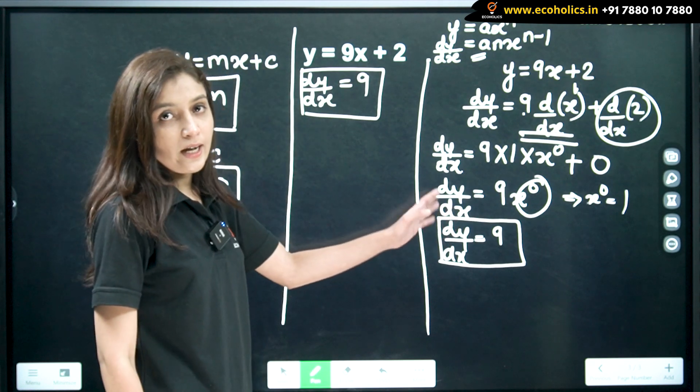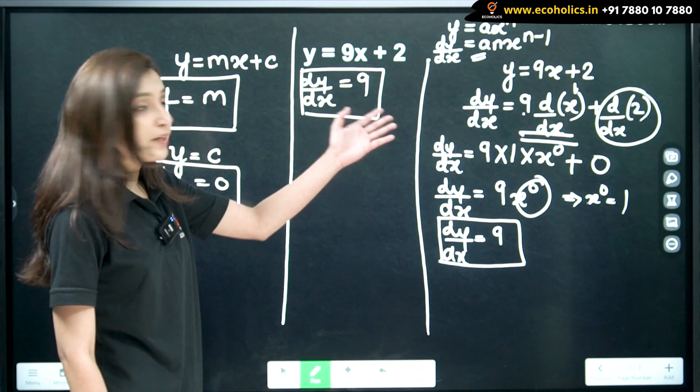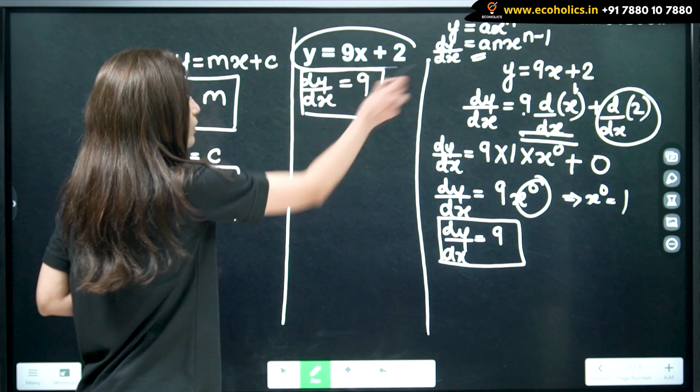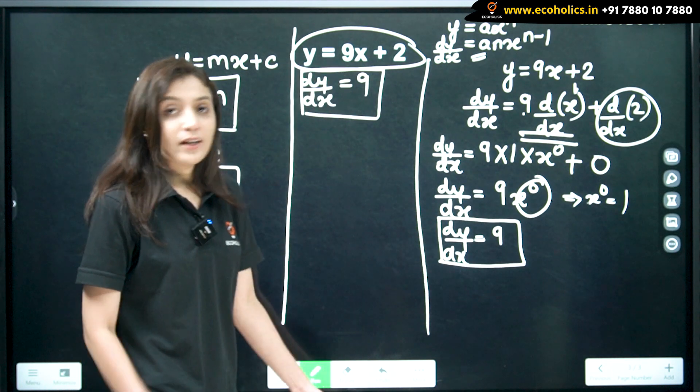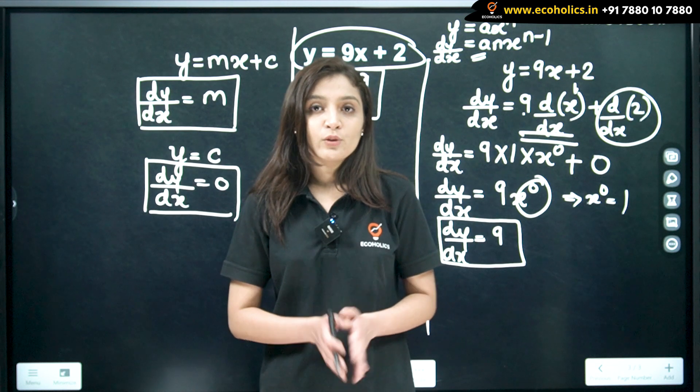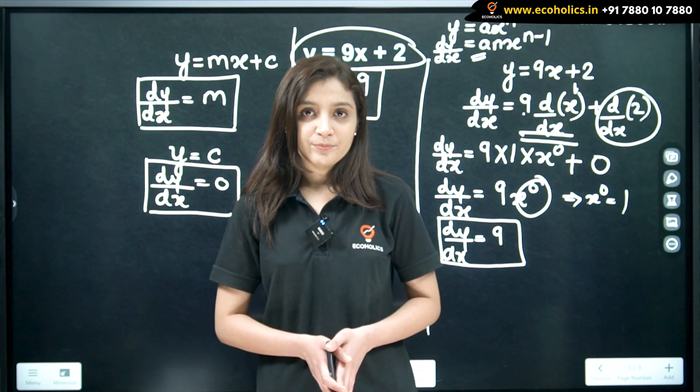This completes our answer. So, now we have seen how simply we can use these rules and find derivatives of terms like this. This completes our answer. That's it for this video. In our next video, we will be studying rule 4 of differentiation. So, do like and subscribe our channel. Thank you.